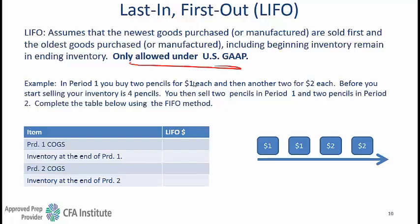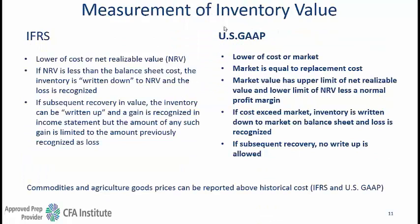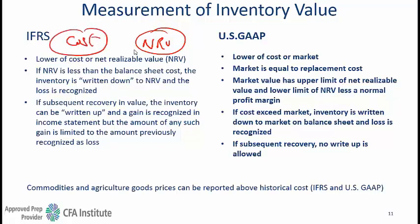Last in, first out (LIFO) is only allowed under US GAAP — LIFO is not allowed under IFRS. For measurement of inventory value, IFRS uses the NRV concept, meaning you show inventory at the lower of cost or net realizable value. With US GAAP you use lower of cost or market value, where market value is replacement cost, while NRV is the price at which you can sell minus the selling cost.